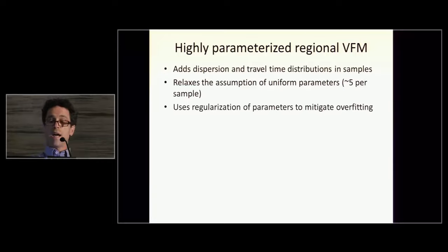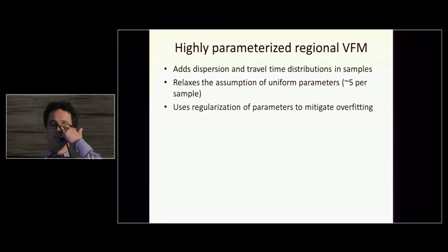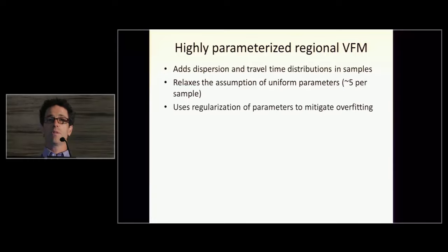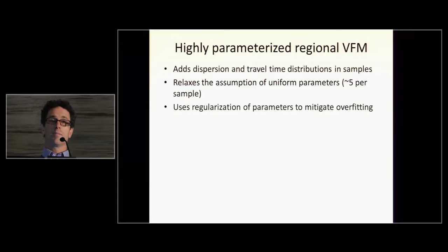What we move to is a highly parameterized regional vertical flux model where we added dispersion and travel time distributions in the samples in a more formal approach than in the previous version, and we relaxed the assumption of uniform parameters. We move from a case where we have the same parameter everywhere to a case where we have individual parameters for every well. This becomes a lot of parameters very fast — five parameters per sample with 1,500 samples — so it becomes intractable in terms of calibration, and we need to incorporate other methods to actually calibrate the model.